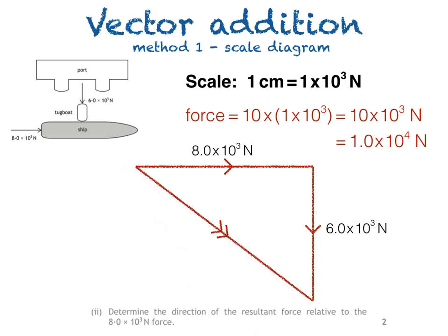Part 2 of the question asks us to determine the direction of the resultant force relative to the 8.0 × 10³ N force, so we'll need a protractor, obviously.